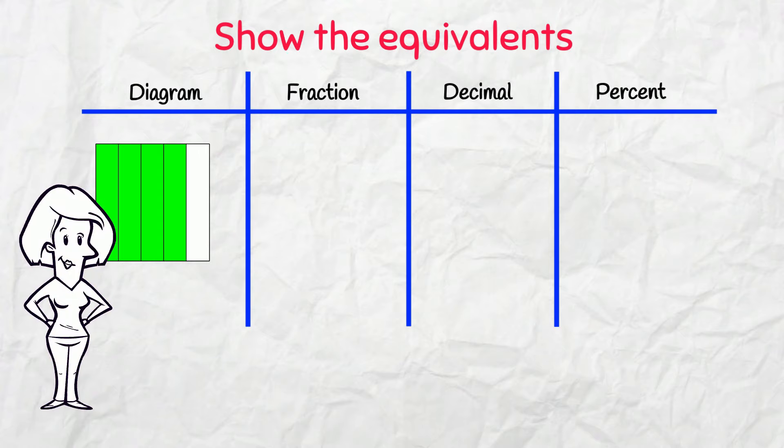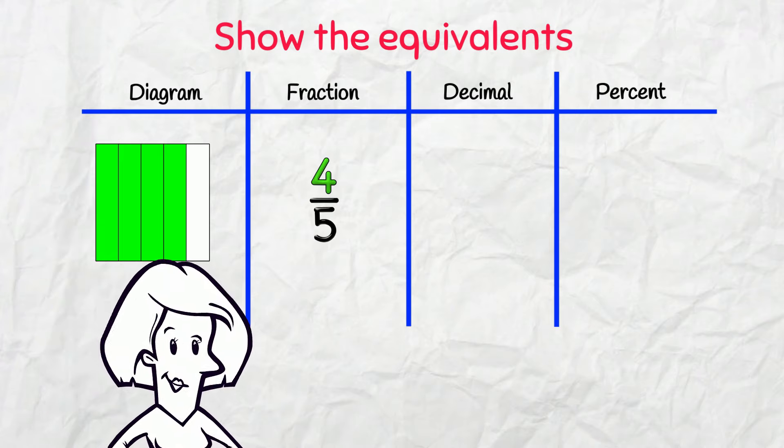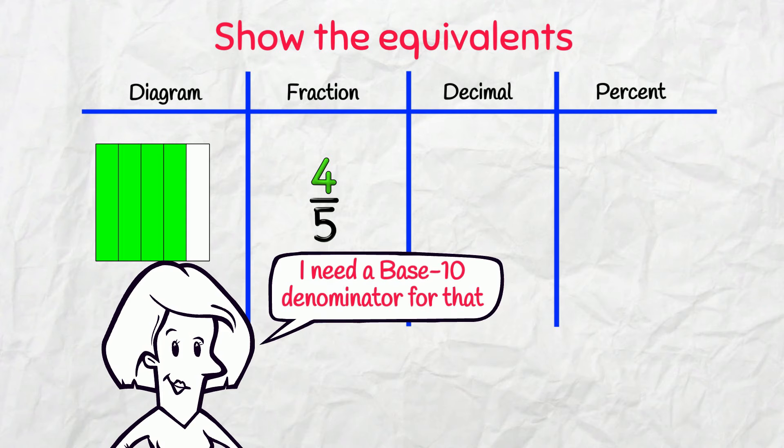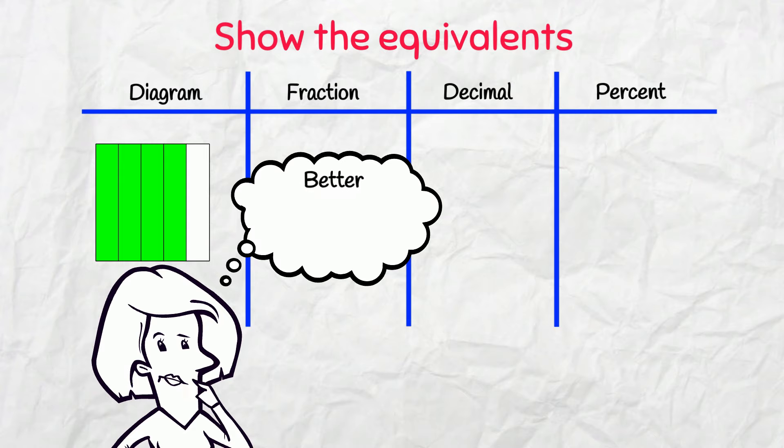The diagram has 5 columns, 4 are green. That's easy, 4 fifths. Now, for the decimal. I need a base 10 denominator for that. In fact, this table would be better if we also had a space for equivalent fractions with a denominator of 10 and 100.